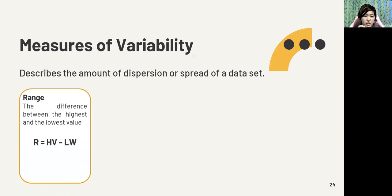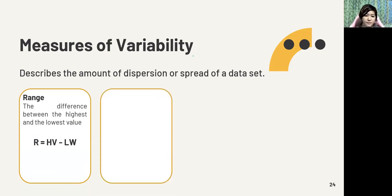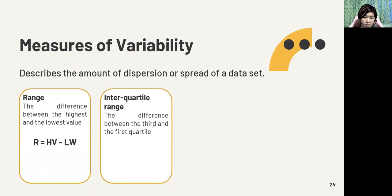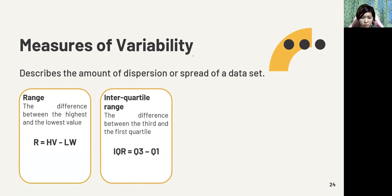First we have the range — it's the difference between the highest and the lowest value. The interquartile range is the difference between the third and the first quartile. The formula is simply Q3 minus Q1.